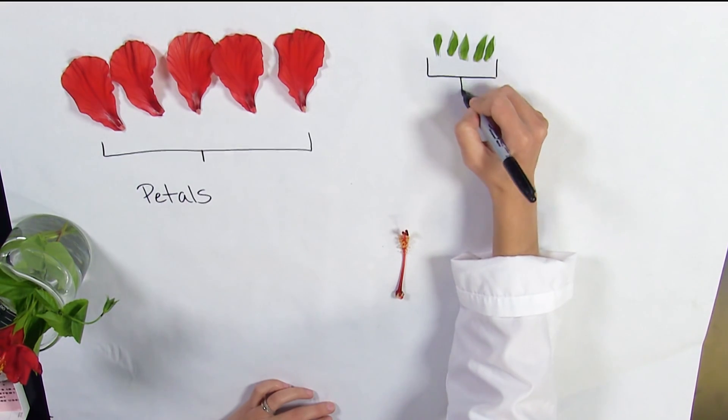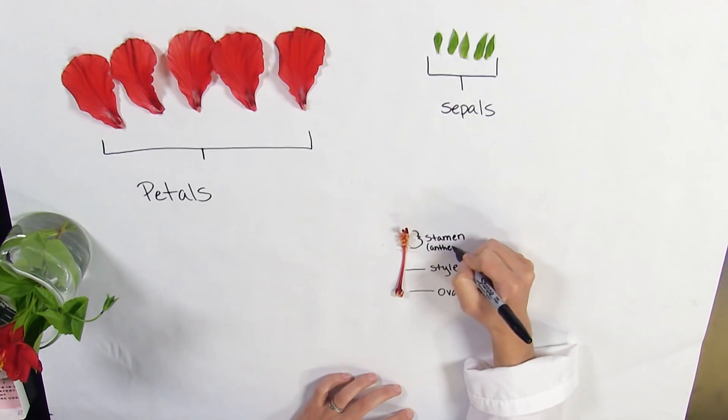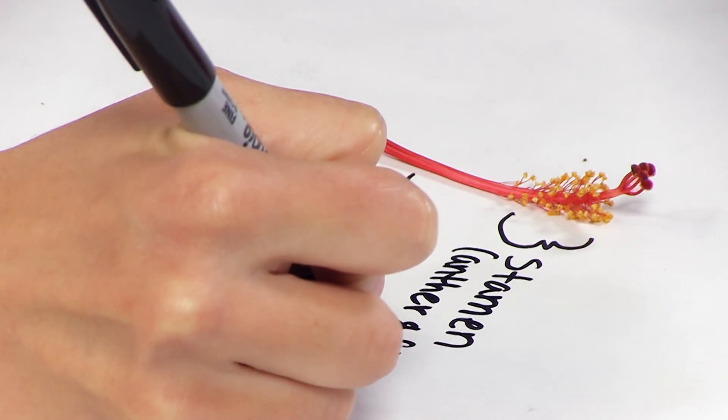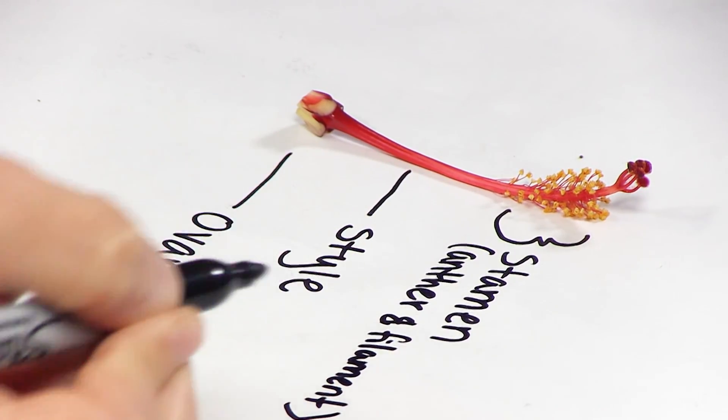For each flower, lay out all of the floral structures and label them. Take a picture of the labeled structures and submit it with your laboratory report. Include a table that indicates the number of sepals and petals for each of the three flowers you dissect.